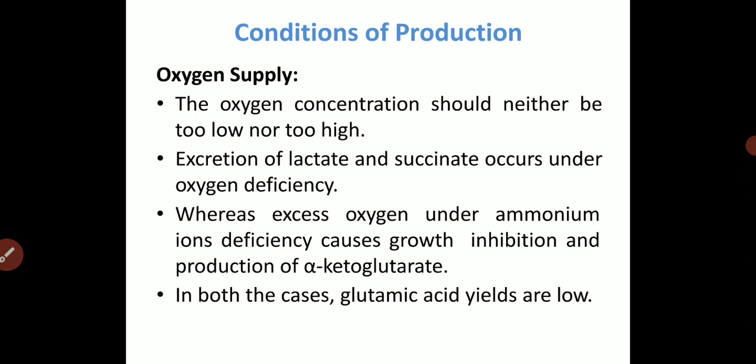As it is an aerobic fermentation, oxygen concentration is very important for the proper fermentation process. However, too much oxygen also has a negative impact on glutamic acid production, so optimal oxygen levels should be maintained. The oxygen concentration should neither be too low nor too high. Excretion of lactate and succinate occurs under oxygen deficiency, whereas excess oxygen under ammonium ion deficiency causes growth inhibition and production of alpha-ketoglutarate. In both cases, glutamic acid yields are low.